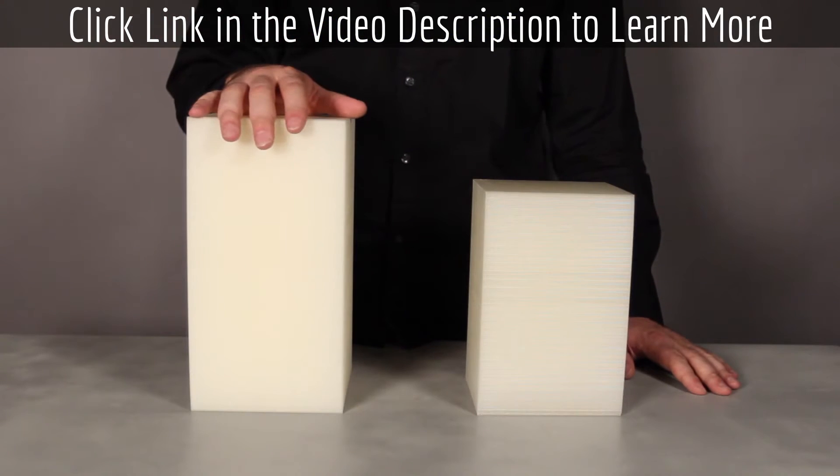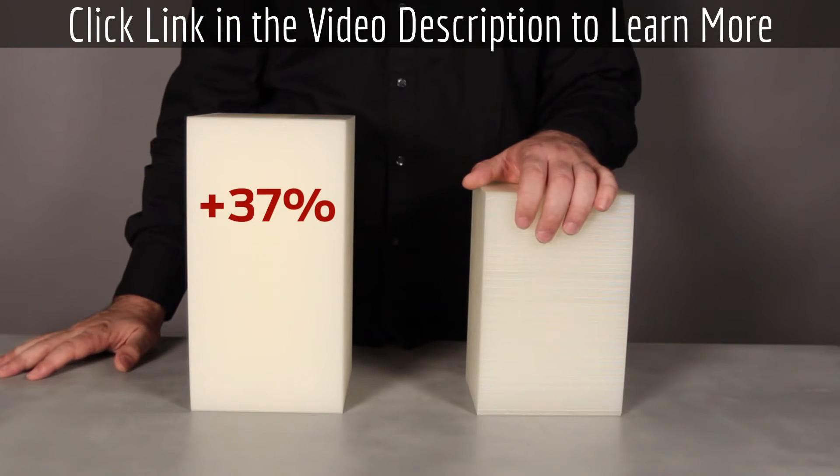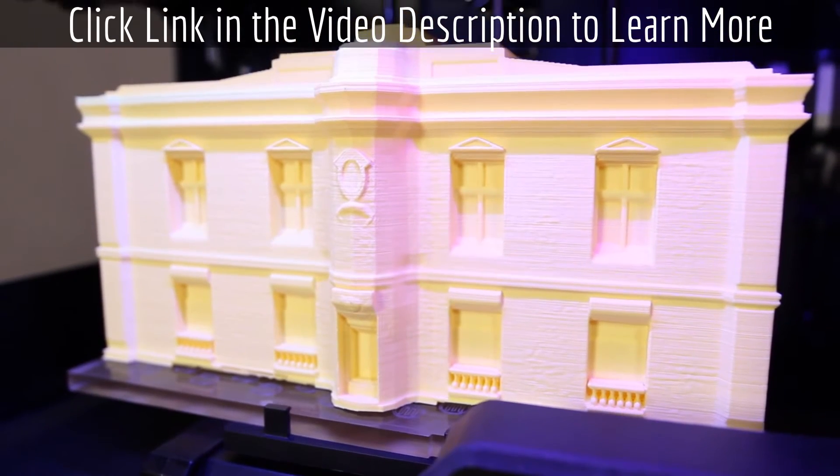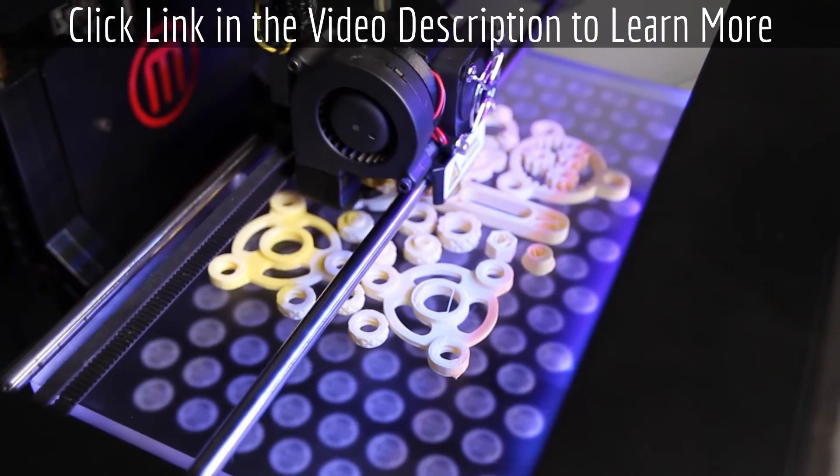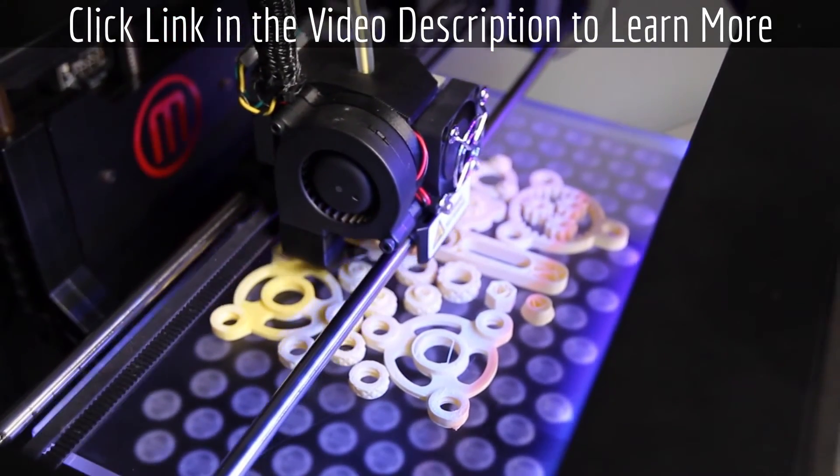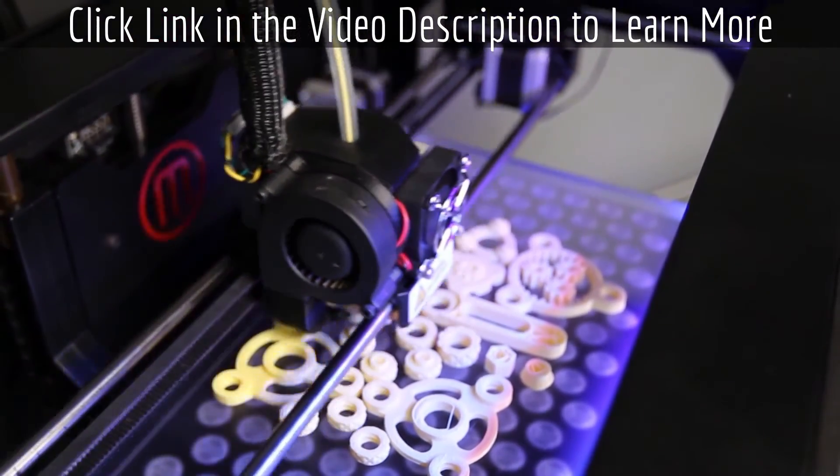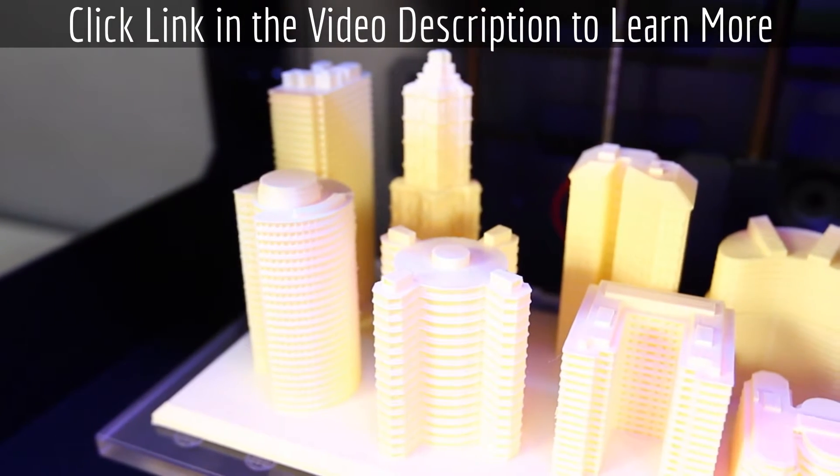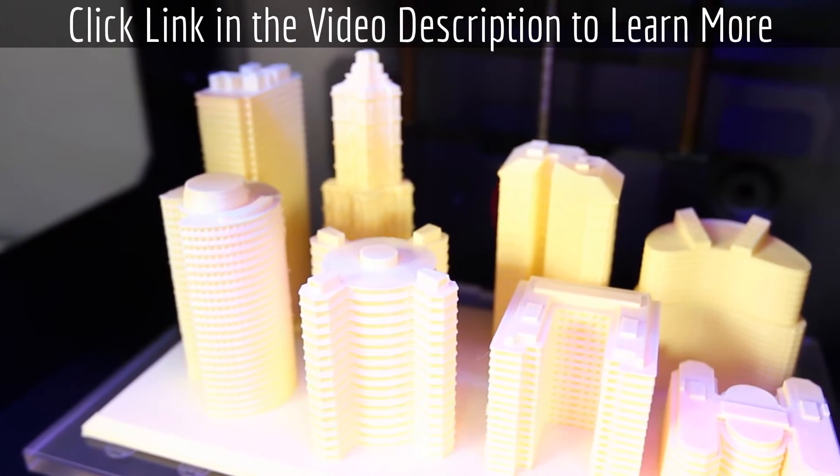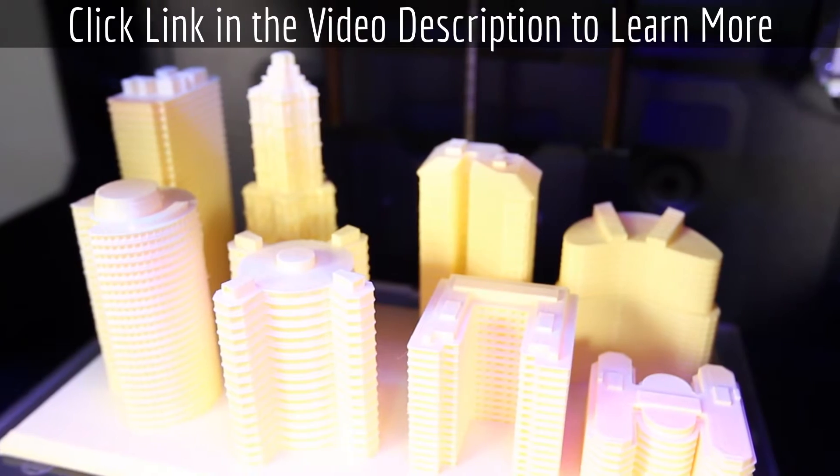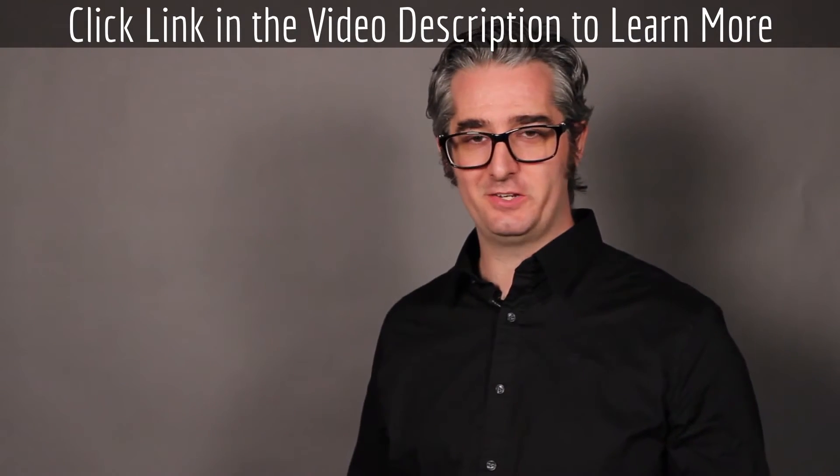The volume of the build area on the MakerBot Replicator 2 is over 37% bigger than it was for the original MakerBot Replicator, and that means more space for your ideas. Place an entire project with multiple pieces on one build plate and save yourself time. This is a machine made for multitasking.